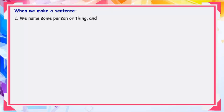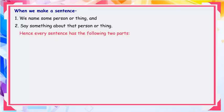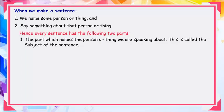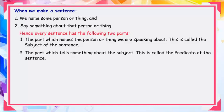Chapter 2: Subject and Predicate. When we make a sentence, we name some person or thing and say something about that person or thing. Hence, every sentence has the following two parts. The part which names the person or thing we are speaking about is called the subject of the sentence. The part which tells something about the subject is called the predicate of the sentence.